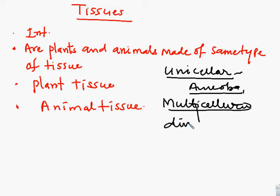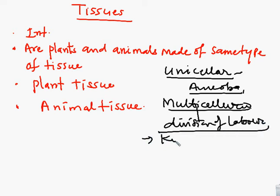Division of labor means different parts perform different functions. For example, the kidney separates waste from the blood. The heart is a pumping organ that pumps the blood. The lungs handle filtration and separation of gases — oxygenated and deoxygenated. These different parts have different functions — this is division of labor.